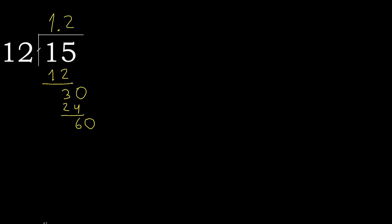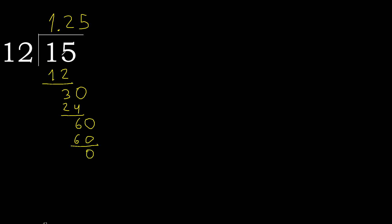Now 60. 12 multiplied by 5 is 60. 60 is not greater, so subtract — remainder is 0. Therefore finish it. 15 divided by 12 is here.